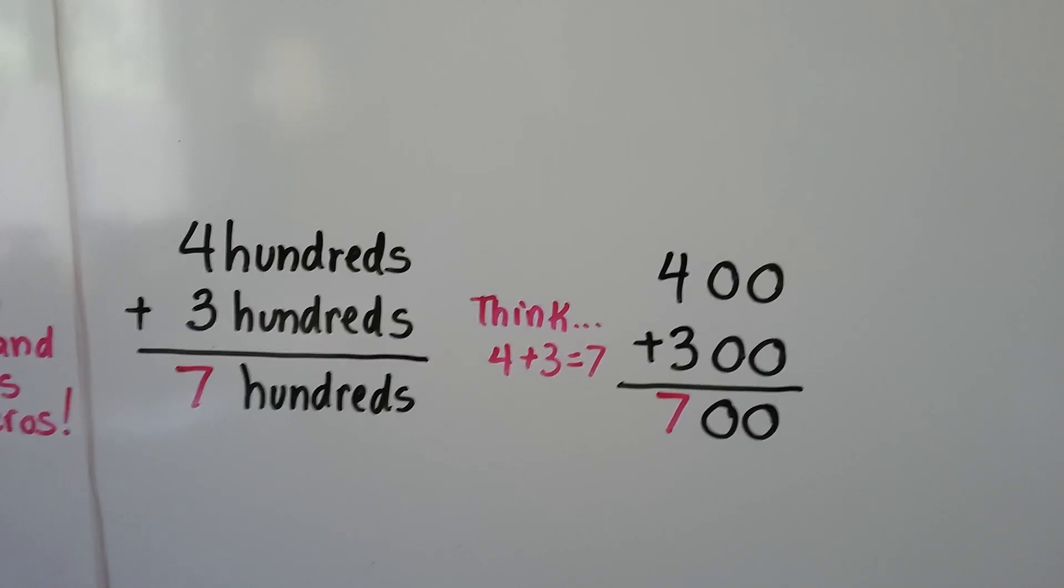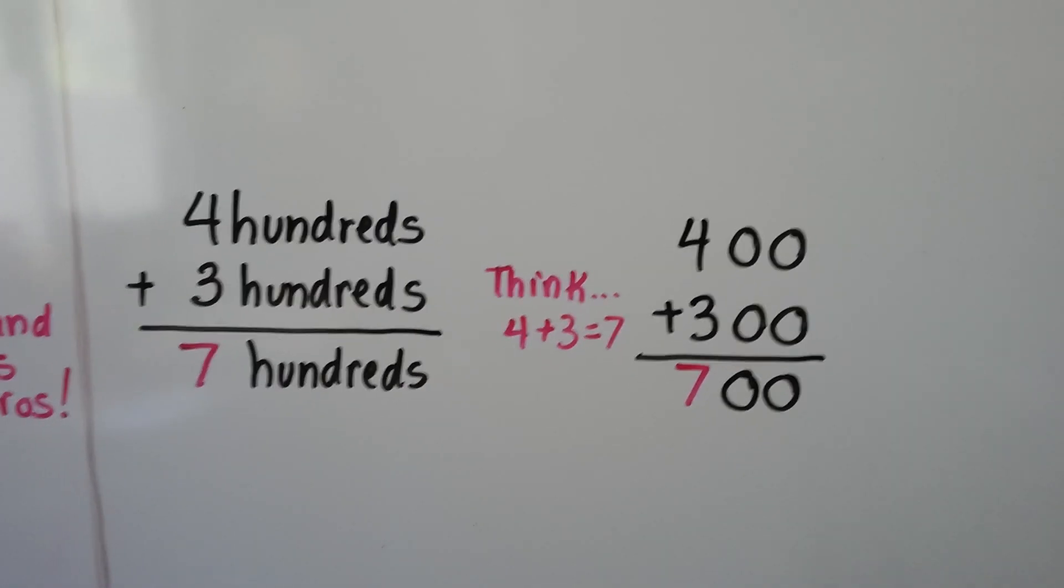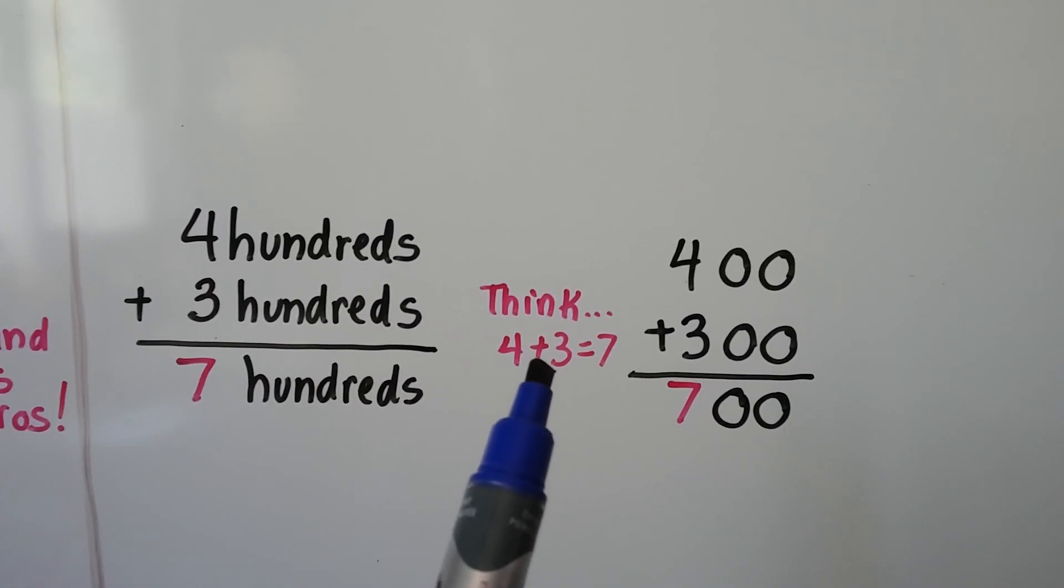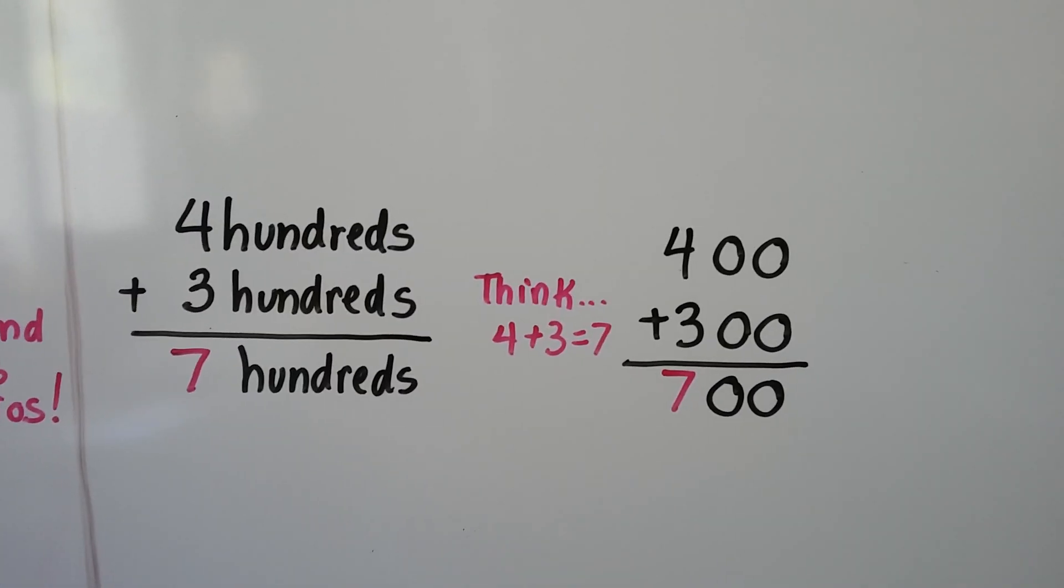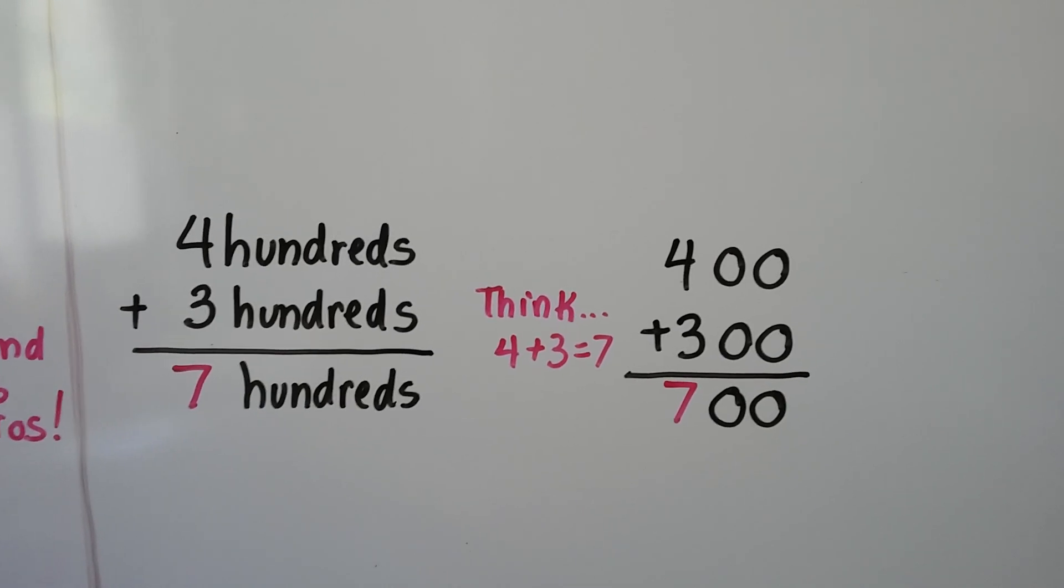Four hundreds plus three hundreds, we just think 4 plus 3 equals 7. Four plus 3 is 7, so four hundreds plus three hundreds is seven hundreds. That's easy, isn't it?